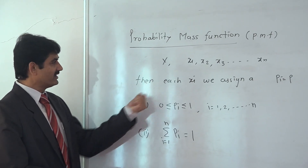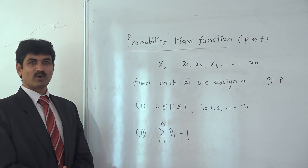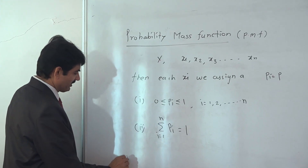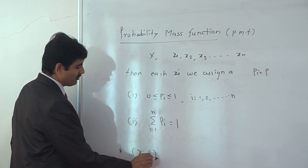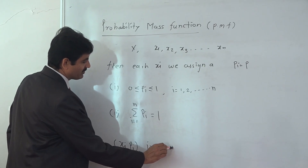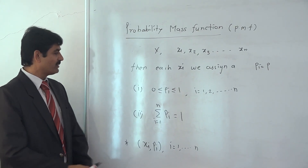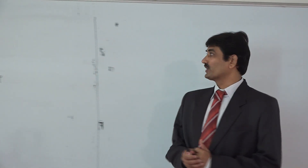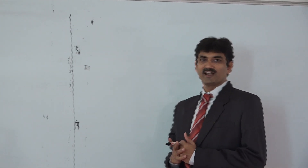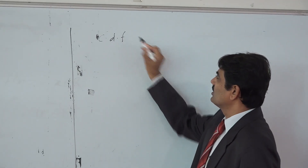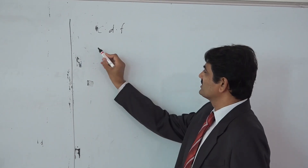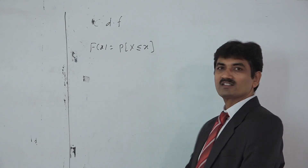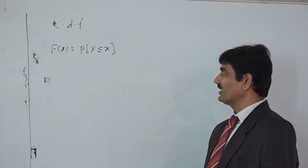If these two conditions are satisfied, then the probability function P is called a probability mass function or probability distribution. The set of ordered pairs (Xi, Pi) for all i running from 1, 2, 3 up to n is called the probability distribution of a random variable X. Next, we will discuss the cumulative distribution function of a discrete random variable X. The cumulative distribution function for random variable X is defined as F(x) = P(X ≤ x).